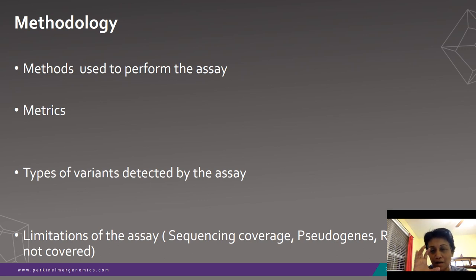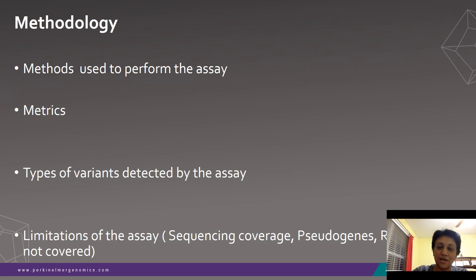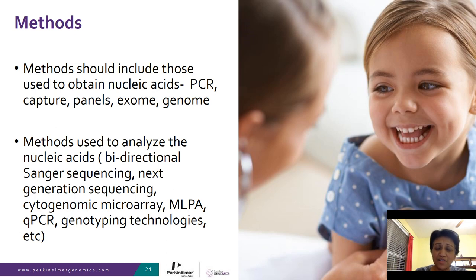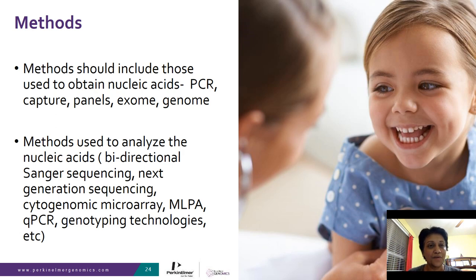These seemingly minor things are actually very important, and this is typically what a genetic counselor handles — ensuring the appropriate test is ordered from the lab with the most comprehensive assay. As a physician, when reviewing the methodology, the easiest path is to check what the assay cannot cover, so it can direct you to the appropriate next test if the result is negative.